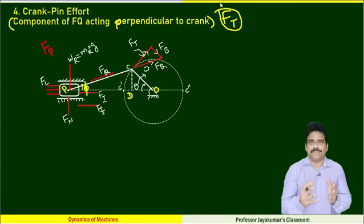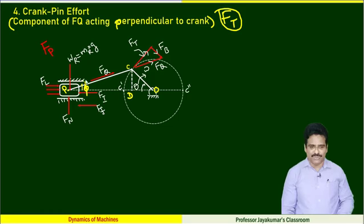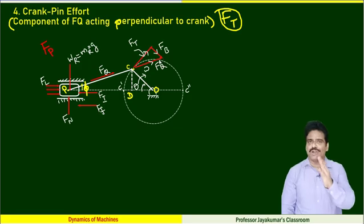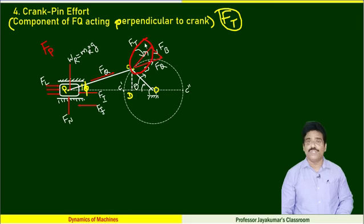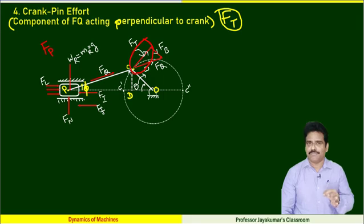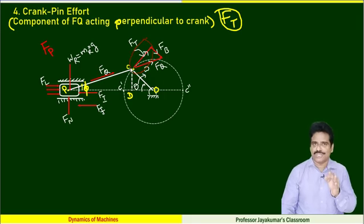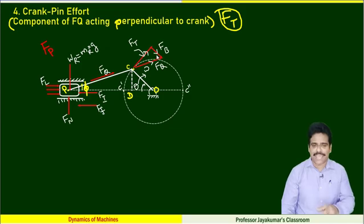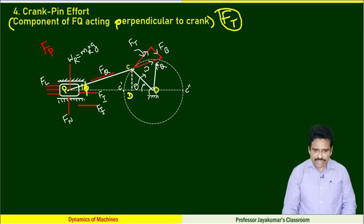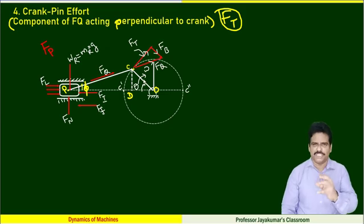The next component is crank pin effort. FQ acting along the connecting rod can be resolved into two components: one perpendicular to the crank, which we call FD — and since it acts at the crank pin, it is also known as crank pin effort. The other component is parallel to the crank. From O, let me draw a perpendicular — we need to do some trigonometry here.